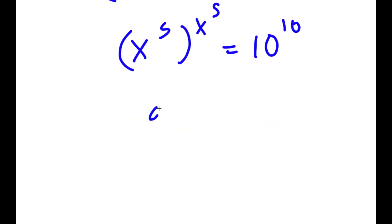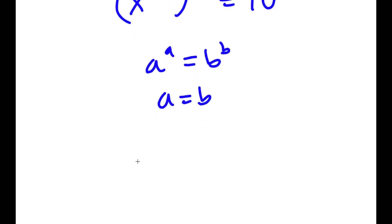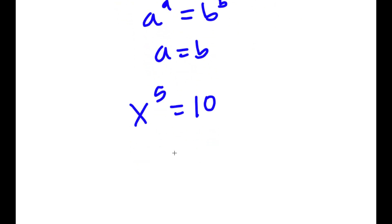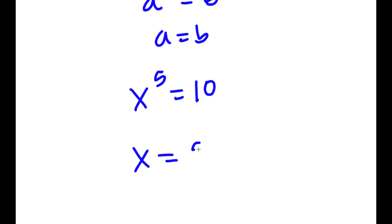Now, if I have something in the form a to the power of a equals b to the power of b, this means a equals b. So x to the power of 5 equals 10, meaning x equals the fifth root of 10.